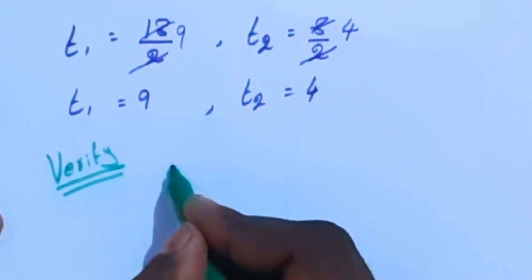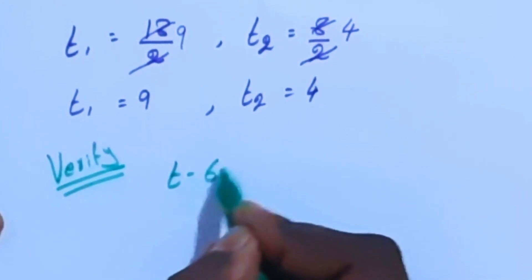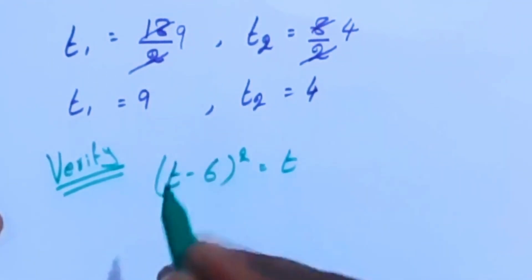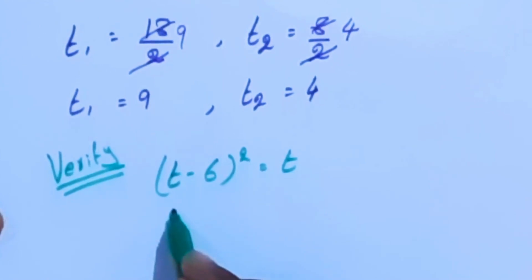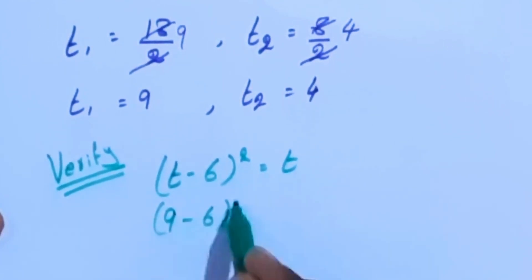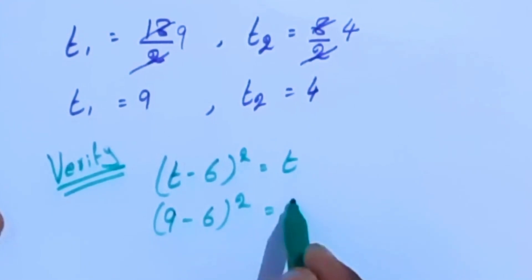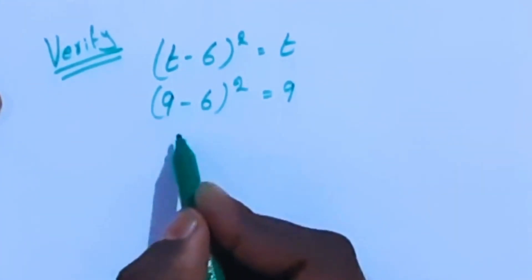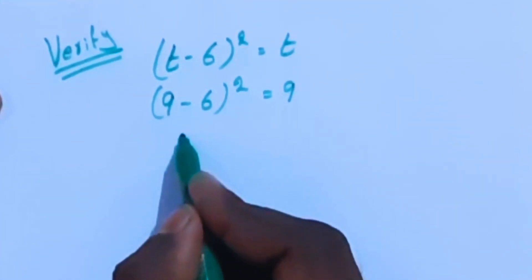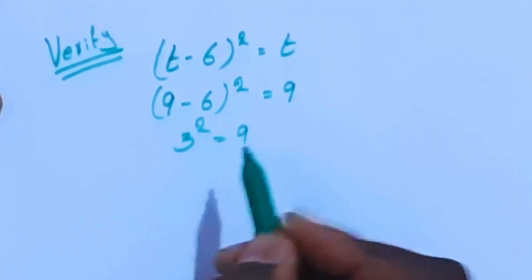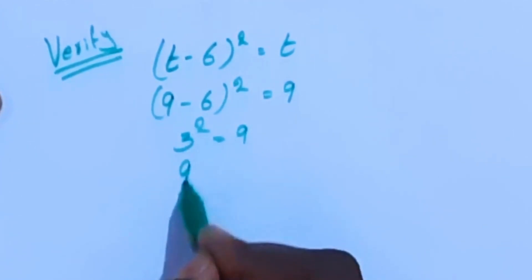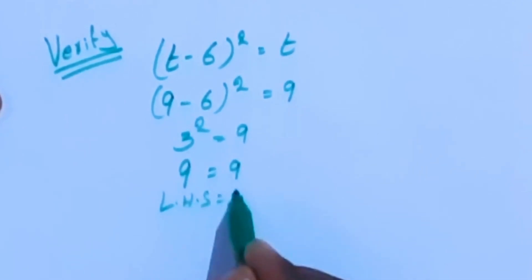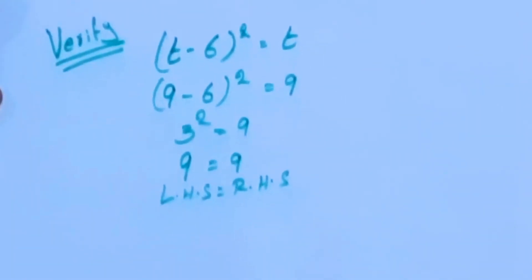Verifying with t equals 9: applying (t minus 6) whole square equals t, we get (9 minus 6) whole square equals 9. So 3 squared equals 9, which gives 9 equals 9. LHS equals RHS, verified.